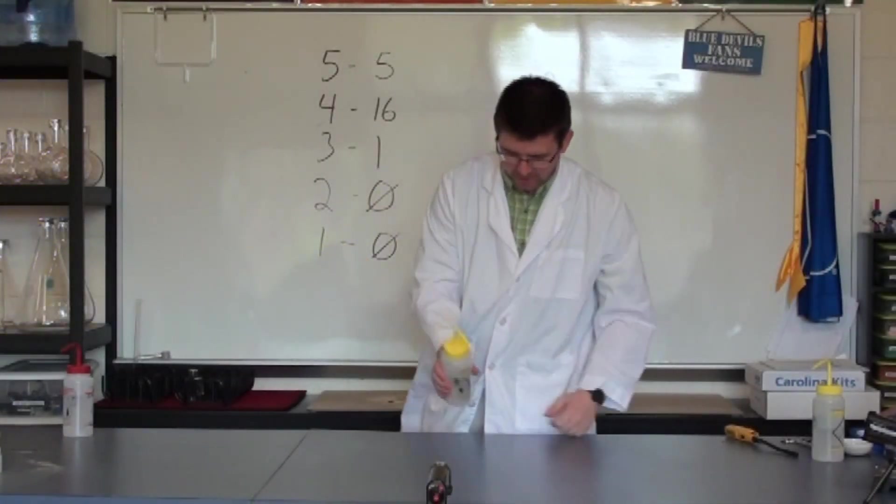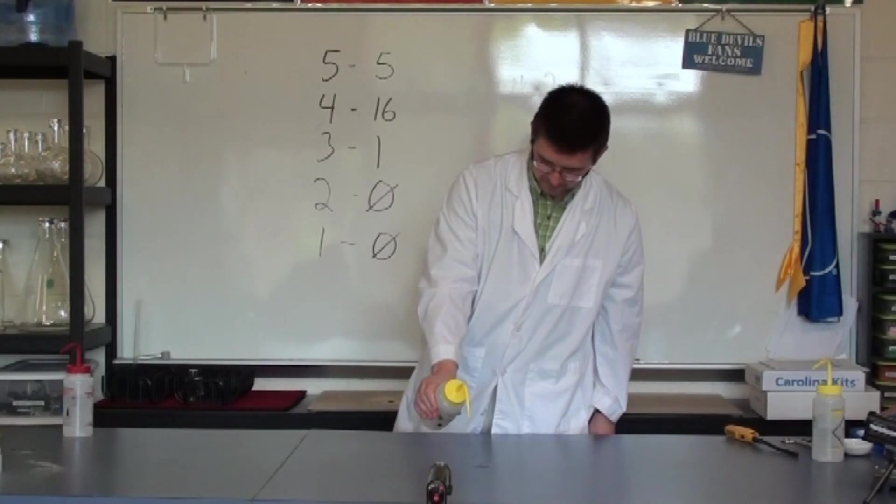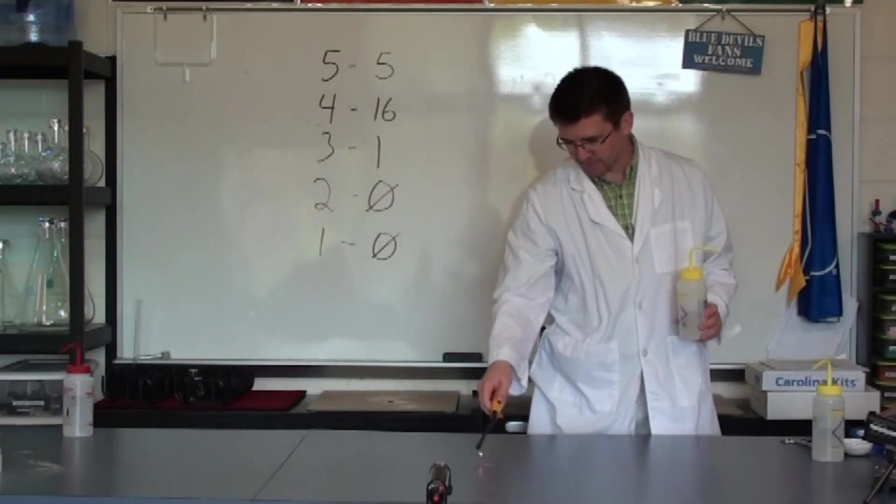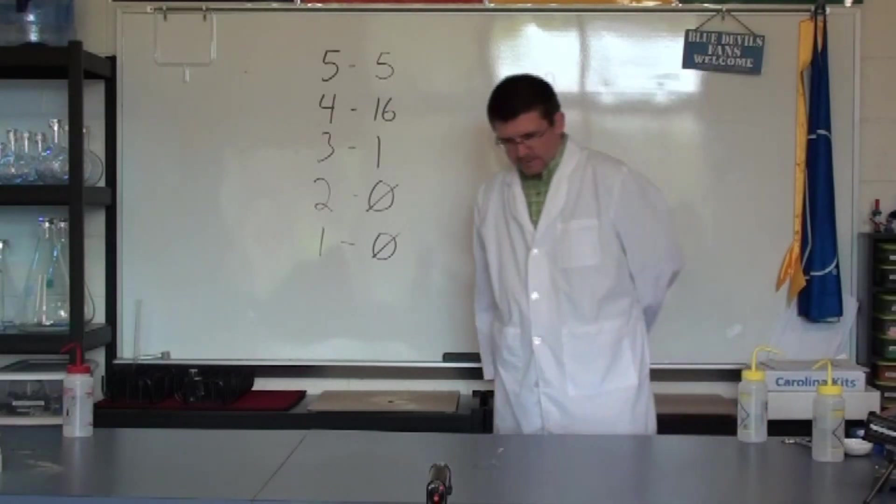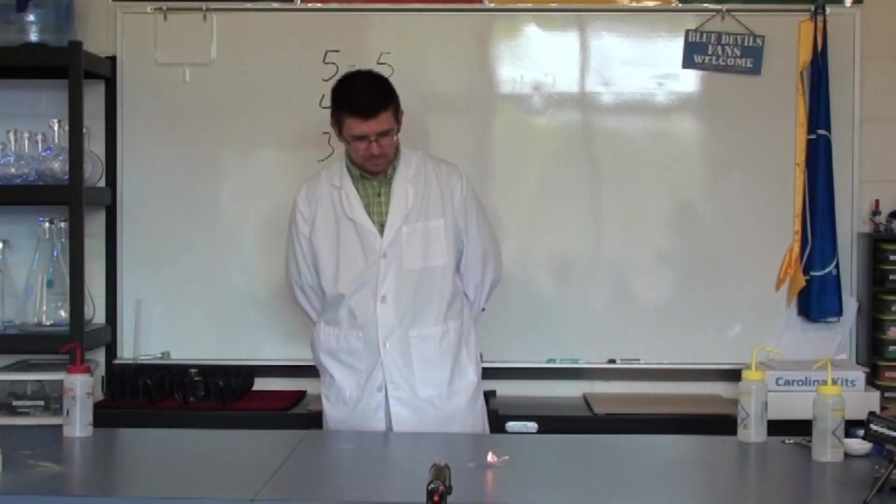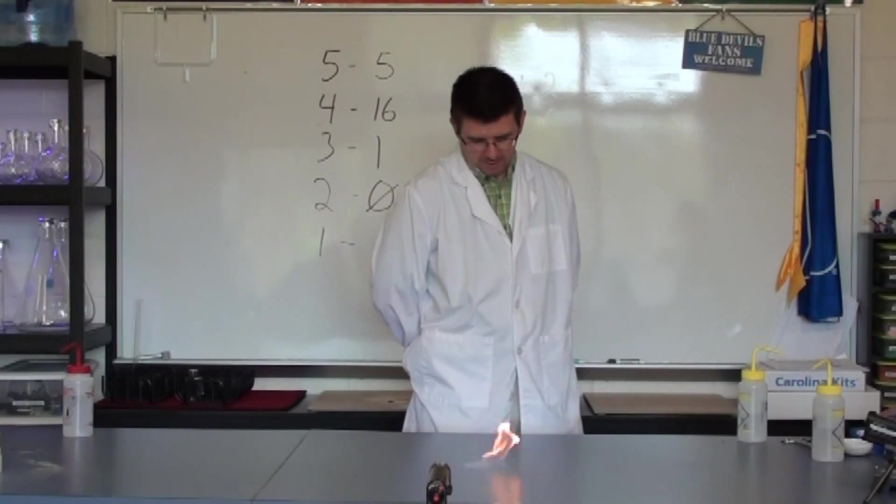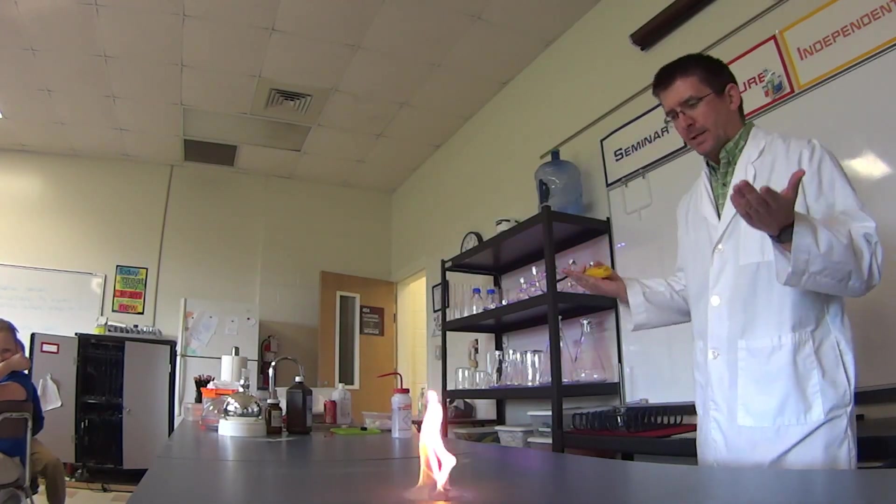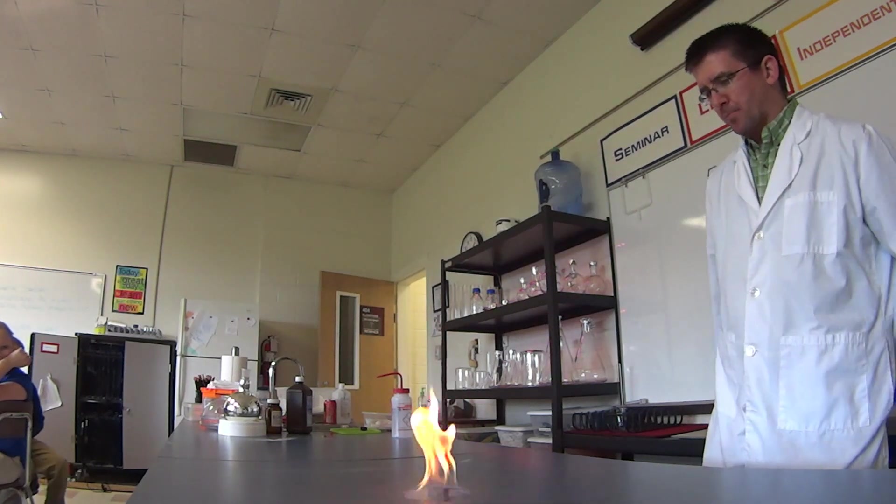But if we put a little bit of the alcohol out here, I can make a little puddle of it. I can light the little puddle on fire. And it's going to burn kind of slowly and steadily, right? Because again, the alcohol vapors, as the alcohol evaporates, it's going up into the air and it's burning off.